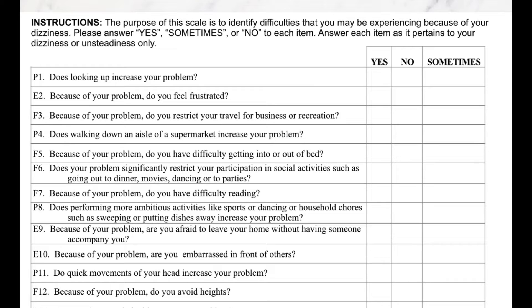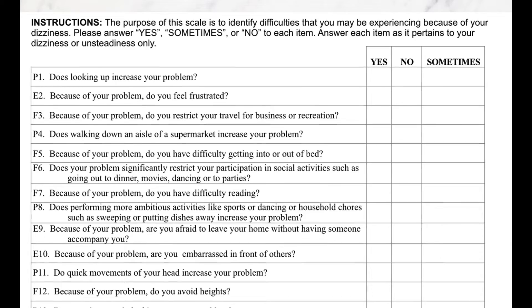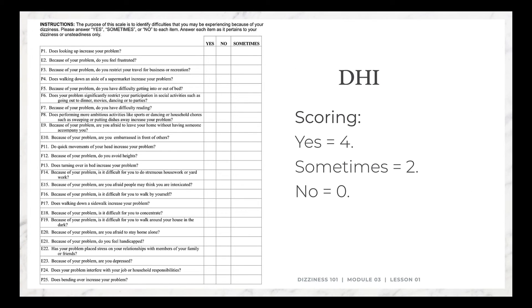Question number one is a physical domain item. Question number two is more of an emotional domain: 'Because of your problem, do you feel frustrated?' — yes, no, or sometimes. Question number three is more functional — what they can't do as a result of the dizziness: 'Because of your problem, do you restrict your travel for business and recreation?' — yes, no, or sometimes. The patient goes through all 25 questions, ticking off yes, no, or sometimes.